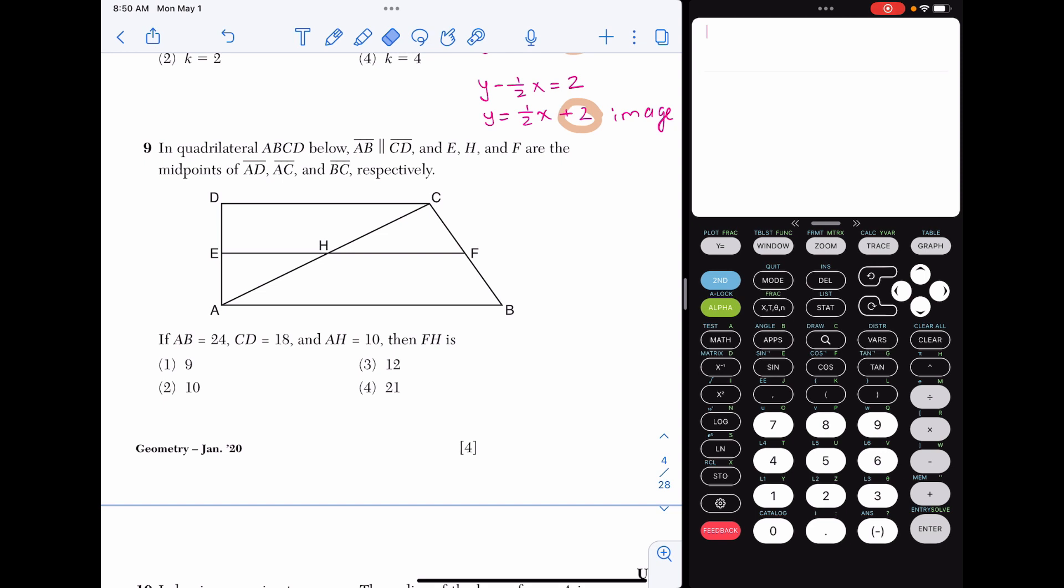Number nine, in quadrilateral ABCD below, AB is parallel to CD. E, H, and F are the midpoints of their sides. So if E is the midpoint of AD, I'm just going to put some tick marks there to mark that off. H is the midpoint of AC, and F is the midpoint of BC. If AB is 24, CD is 18, and AH is 10, we're looking for the length of FH. So if AH is 10, I already know AH and HC are congruent. So I'm going to put a 10 over here as well.